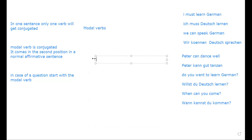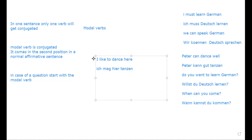Here is a small example: 'I like to dance' — 'Ich möchte tanzen'. The modal 'möchte' comes in second position; the second verb 'tanzen' is not conjugated and goes to the end of the sentence.